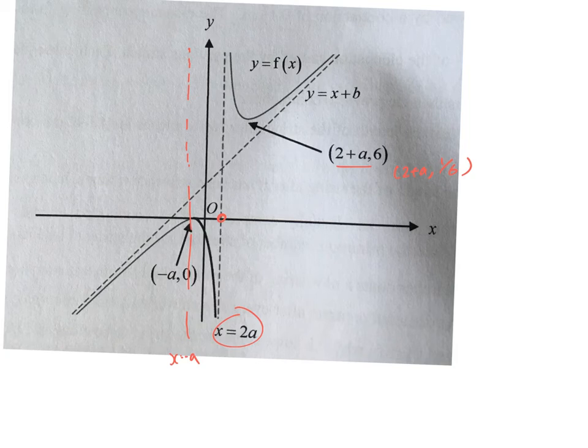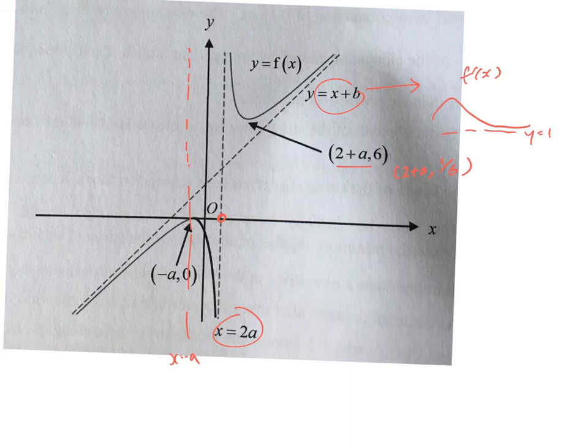The graph goes towards y equals x plus b. Some of you thought of the f-prime graph and drew a horizontal at y equals 1, but that is wrong. For this 1 over f(x) question, the graph should be going towards f(x) itself.